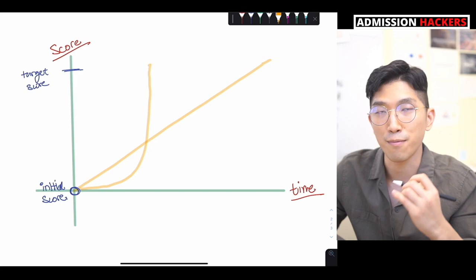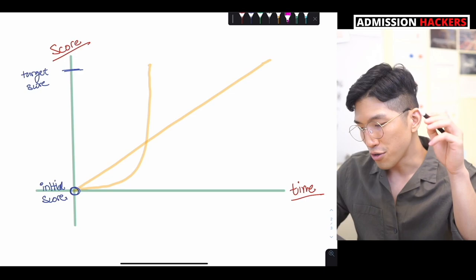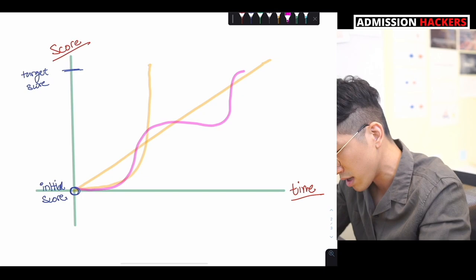But unfortunately, these expectations are the exact opposite of what actually happens in the real world. Because based on my experience working with over 200 students and successfully raising their SAT scores, their scores didn't go up linearly, their scores didn't go up exponentially, but it went up using what I call a stair pattern which looks something like this.